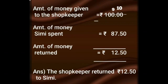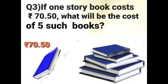We have taken from the 0, so this has become 9. So 9 minus 7 is 2. We again borrowed 10 from the next 0, so it is also 9. So 9 minus 8 is equal to 1. The shopkeeper returned rupees 12.50 to Simi. Children, just do simple subtraction.